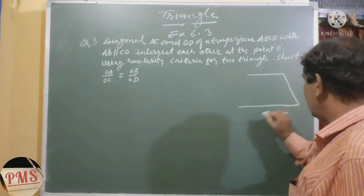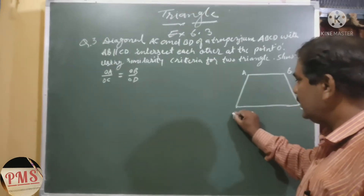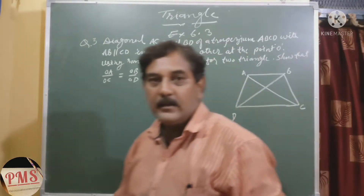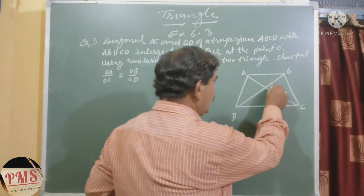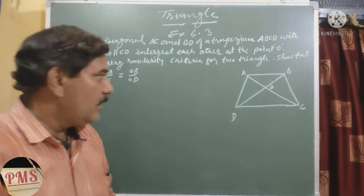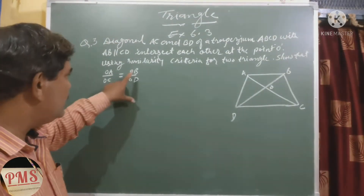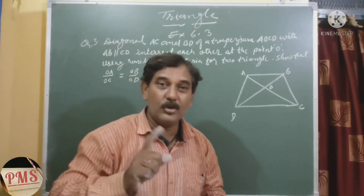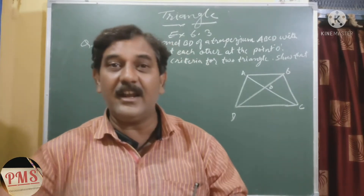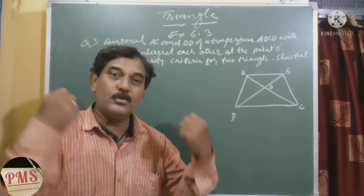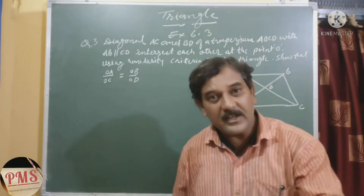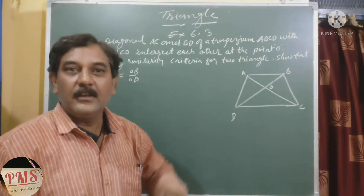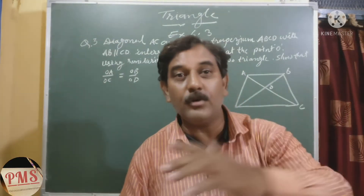We need to prove that AO upon OC equals OB upon OD, using a similarity criteria. Not all criteria can be applied to every diagram. We need to first check which similarity criteria can be followed for this triangle. Since AB is parallel to CD, with a transversal cutting through them, the alternate interior angles are equal.